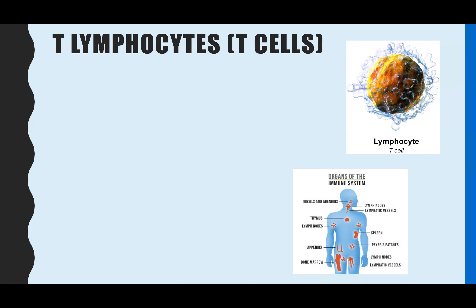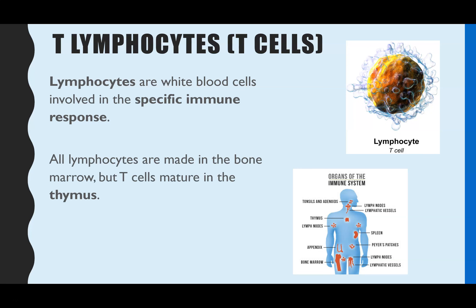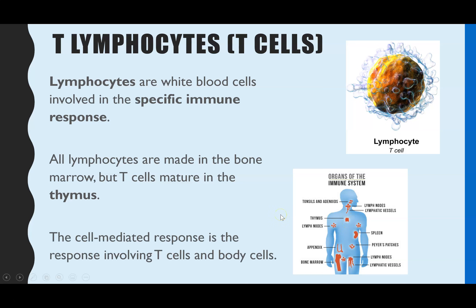The T lymphocytes, or T cells for short, are involved in the specific immune response — this is the second line of defense after a pathogen has got into the bloodstream. All lymphocytes are made in the bone marrow, but the reason these ones are called T cells is because they mature in the thymus, which is this organ just here. The cell-mediated response is the response involving the T cells.